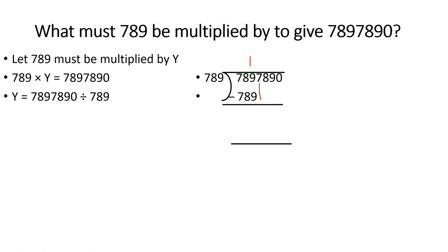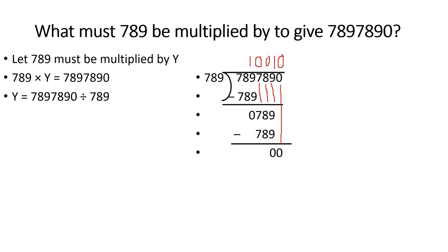Bring down 7: 7 is smaller than 789, so write 0. Bring down 8 to get 78 — still less than 789, so write 0. Bring down 9 to get 789. Now 789 ÷ 789: 789×1=789. Subtract to get 0, bring down 0. Since 0 is less than 789, write 0. So the quotient is 10,010 and the remainder is 0.